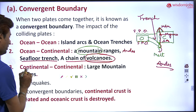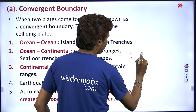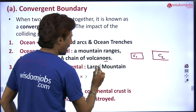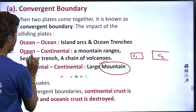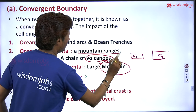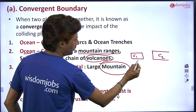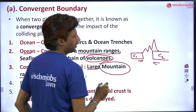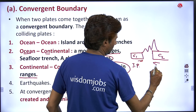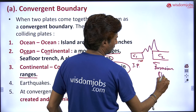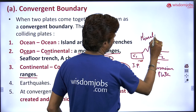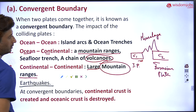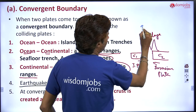The third combination is continental-continental. Now, one continent and another continent coming together results in large mountain ranges, but not volcanic. When ocean and continent collide, it results in volcanic mountain ranges. But when two continental plates come towards each other, they result in large mountain ranges. For example, the Himalaya. Here this is the Indian plate and this is the Eurasian plate — both come towards each other, forming the Himalaya.